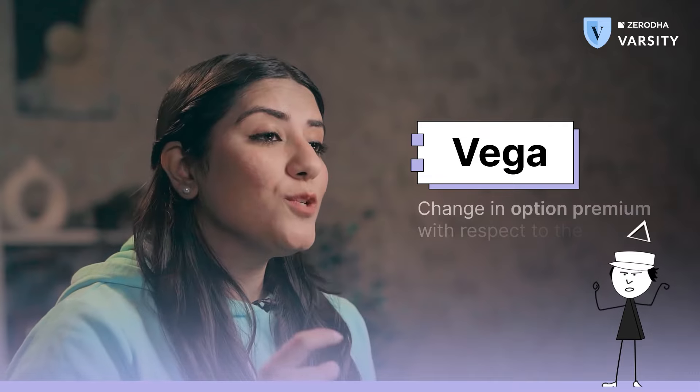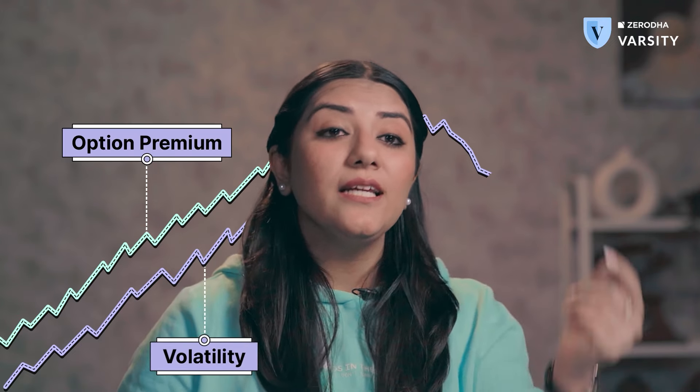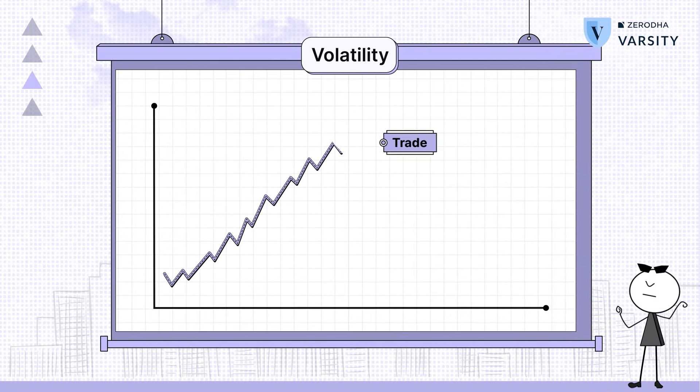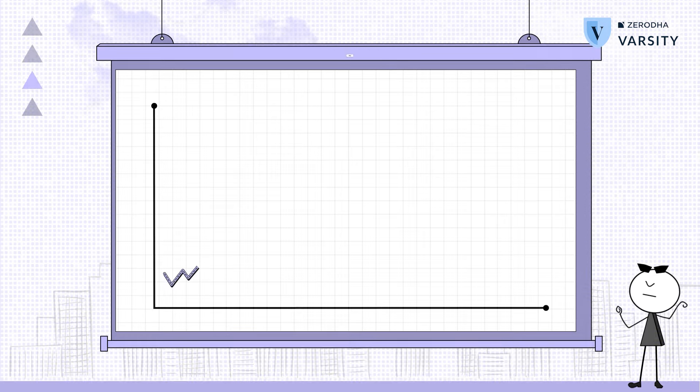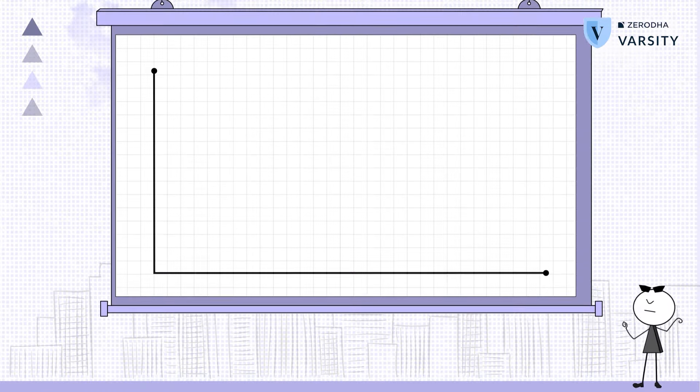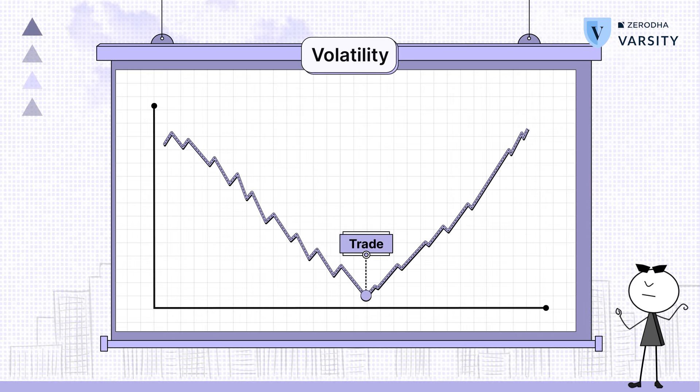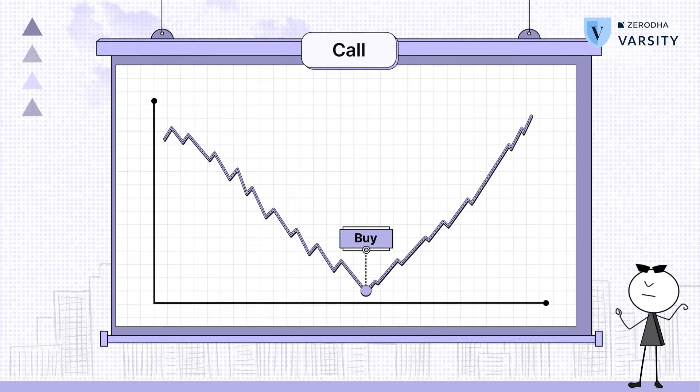Now let's understand our second factor — that is Vega. Vega means how much change comes in the option premium depending upon volatility. Generally, when volatility is high, the option premium increases, and when volatility decreases, our option premium also decreases. Therefore, before taking a trade, you should know what the volatility is before the trade and where the volatility can go after taking the trade. For example, if before the trade volatility was high and after the trade it will fall, then in such a case you should short the put option — because in the case of a put option, we want our premium to fall. But if we reverse the situation — that is, before the trade volatility is decreasing and after it is increasing — then buying a call option will be better, because you want your premium to increase, and that will happen only when volatility is higher.